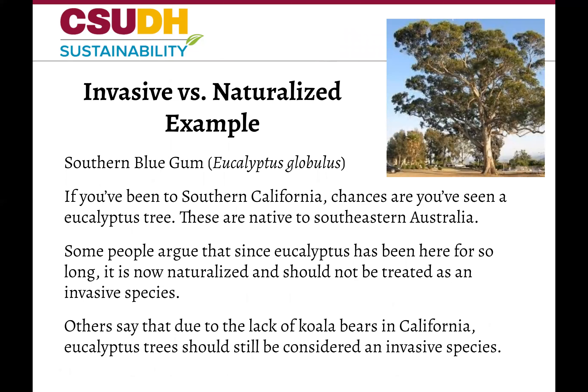Here's an example that is brought up a lot in the invasive versus naturalized debate in southern California: eucalyptus. If you've been to southern California, you've seen this tree — probably numerous of them. But these are native to southeastern Australia and we don't have koalas here eating them, so they should be considered invasive, right? Well, some people argue that because it's been in this state for so long, it should be considered naturalized. Personally, I still consider them to be invasive — but what do you think?